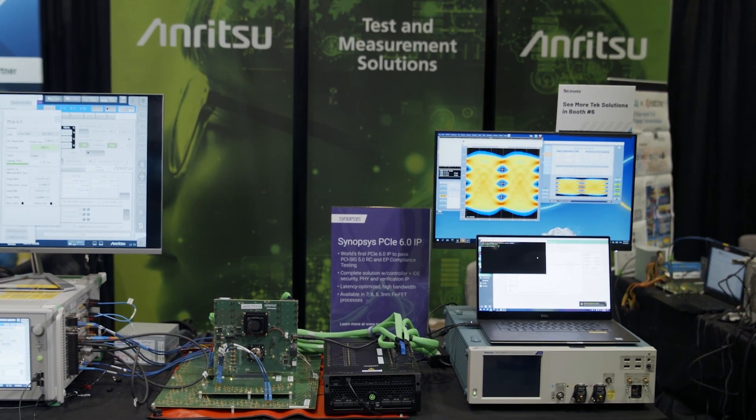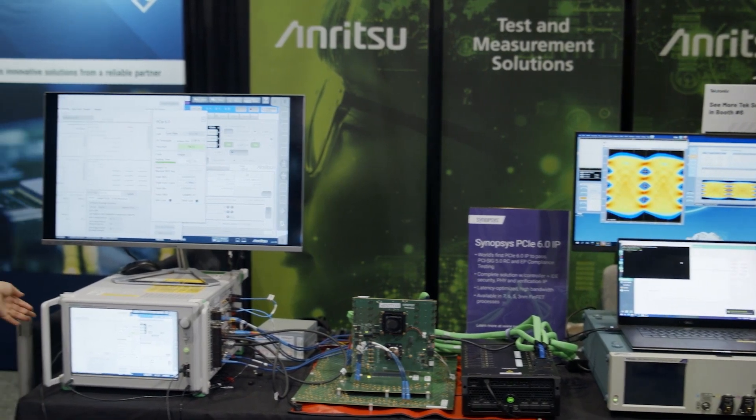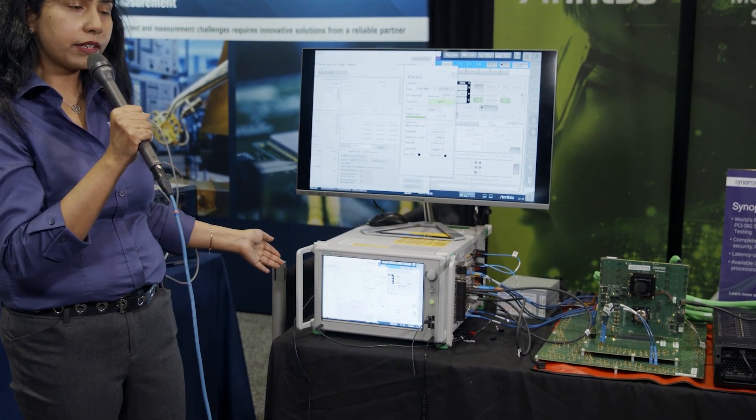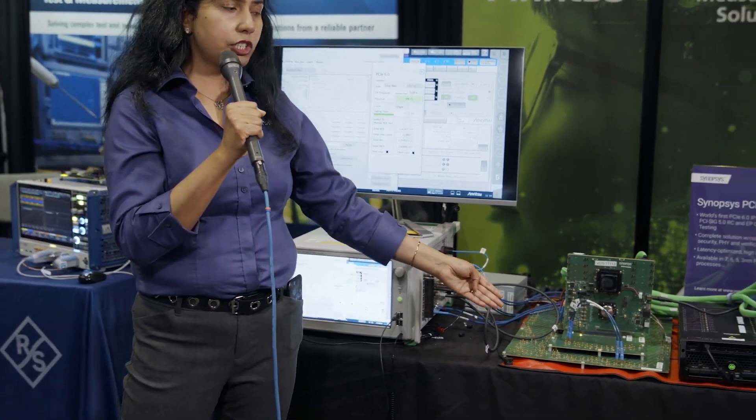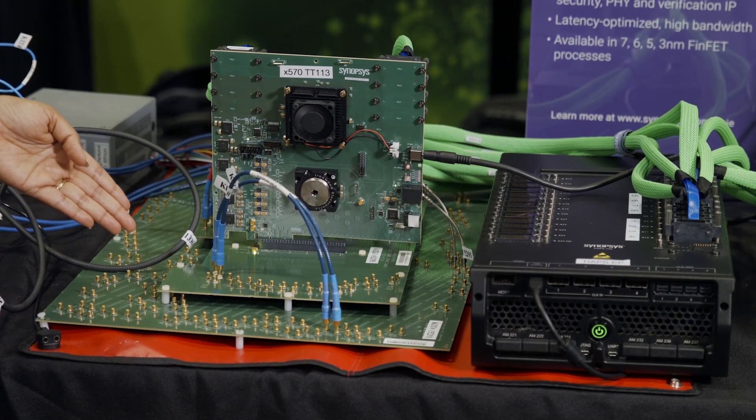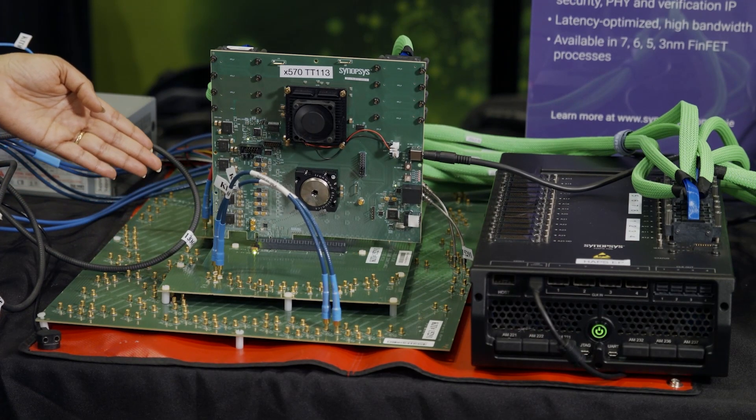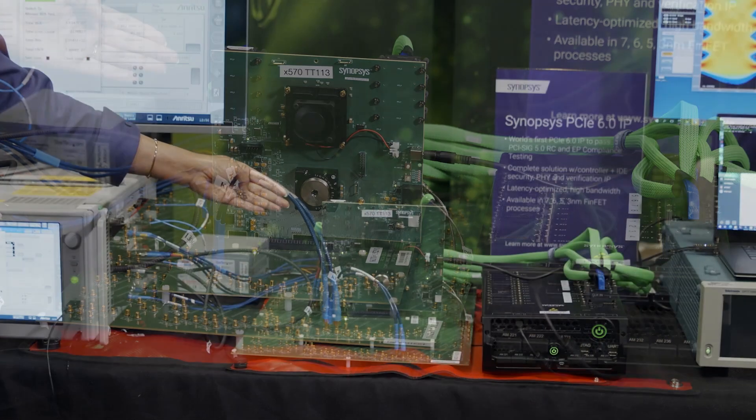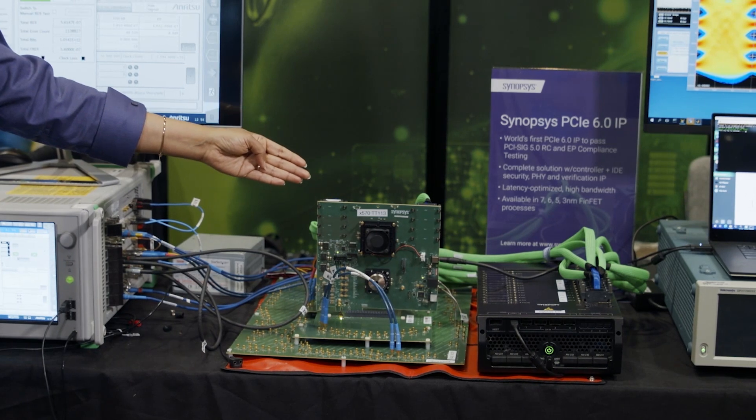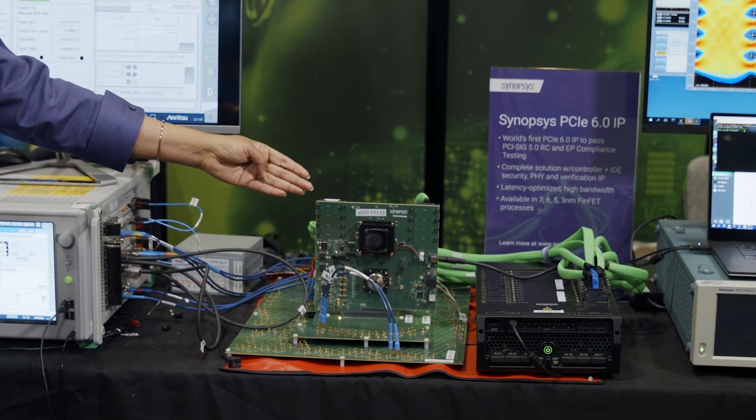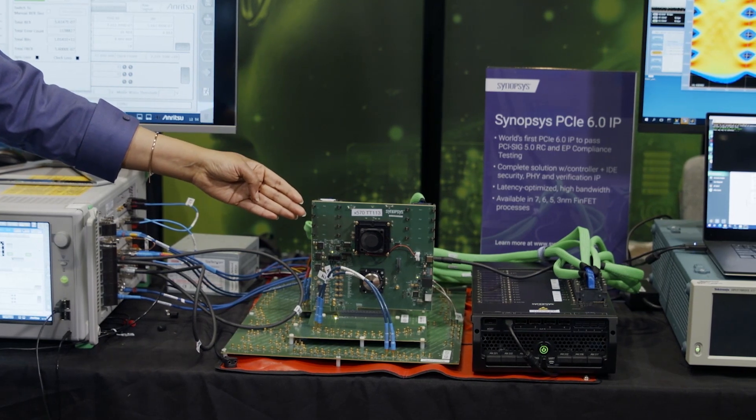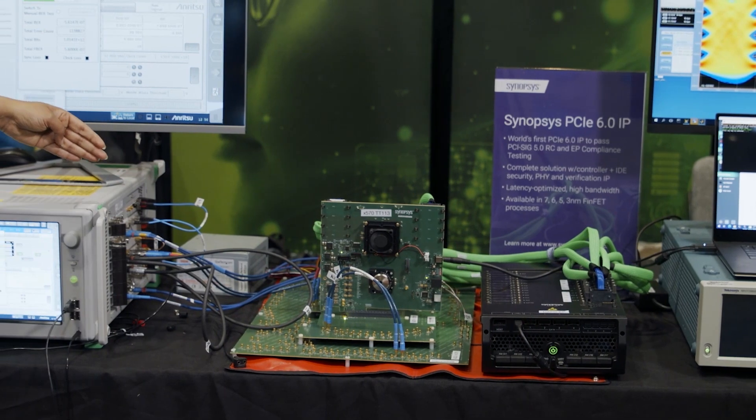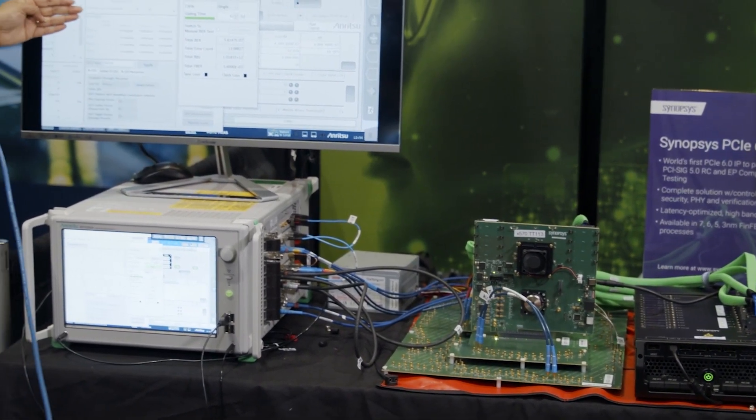Let's focus on the actual demonstration itself. Here the Anritsu BERT is acting as a host and it's sending the stressed eye pattern through this ISI channel. This is the worst case 33 dB and it's going to Synopsys end-to-end solution with PHY and controller. The receiver is equalizing the stressed pattern and it's looping back through the controller as well as the PCS and the controller and coming back to the PHY transmitter again. The transmitter is getting the signal back to the BERT here.